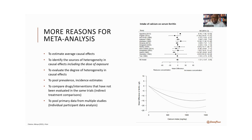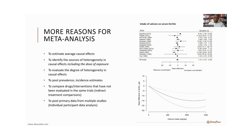Sometimes it is not the causal relationship between an exposure and outcome that we're looking at; we're just looking at prevalence or incidence rates across different geographies or different timelines, and we want to get an overall prevalence or incidence estimate. A meta-analysis provides us with a statistical framework to synthesize prevalence across different studies.